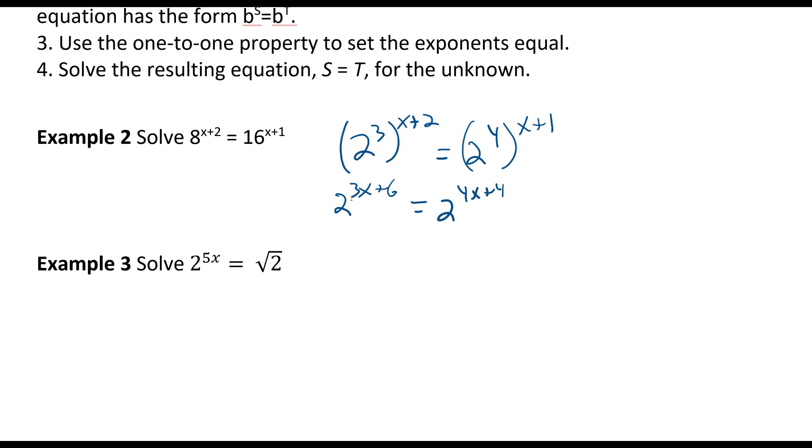Now we have 2 to a power and we can set those powers equal to each other. So 3x plus 6 equals 4x plus 4. We can subtract 3x from both sides and subtract 4 from both sides and we get 2 equals x.